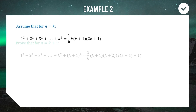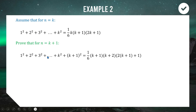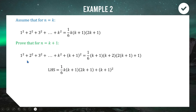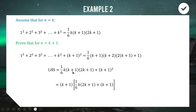Now we attempt to prove this. We substitute our assumption into the left-hand side: everything up to k² becomes (1/6)k(k+1)(2k+1), then we add (k+1)². Both terms have a common factor of k+1, so we factor that out, leaving (1/6)k(2k+1) from the first part and one remaining (k+1) from the second.